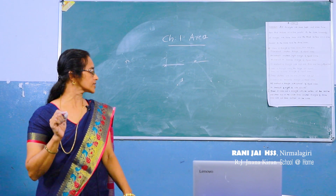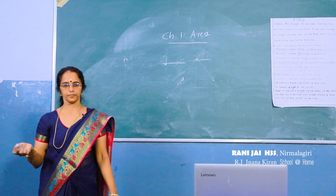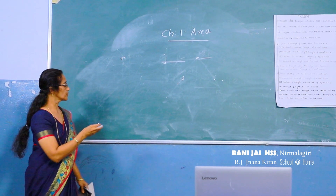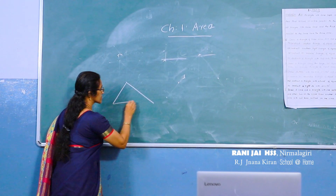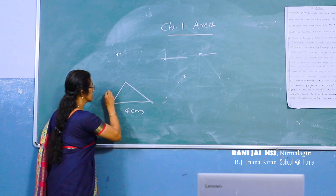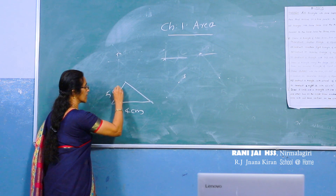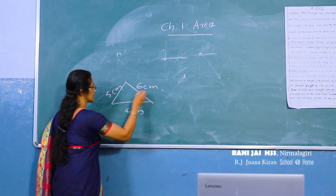Construct an isosceles triangle for a given triangle. The figure has sides 4 cm, 5 cm, and 6 cm.